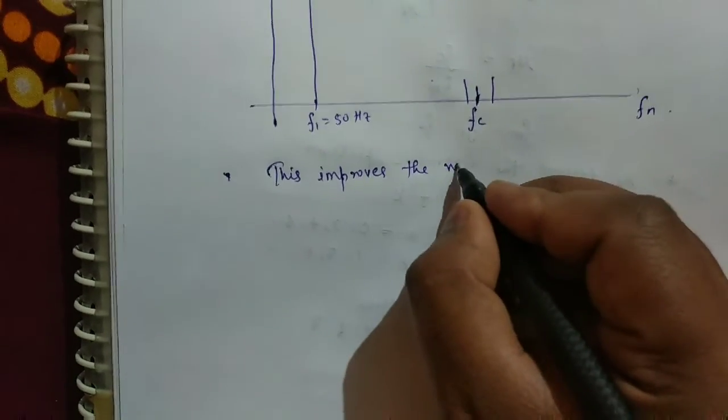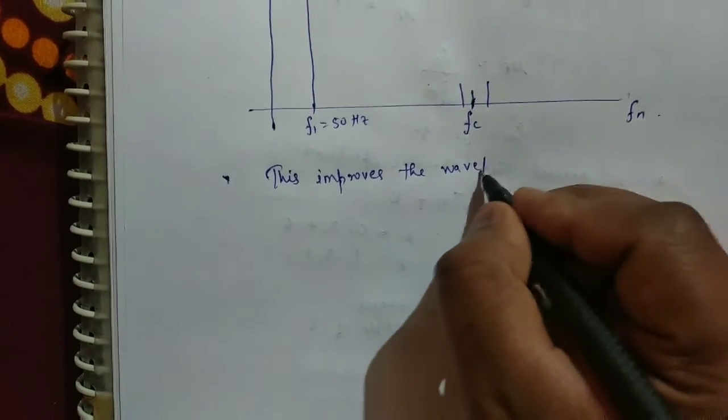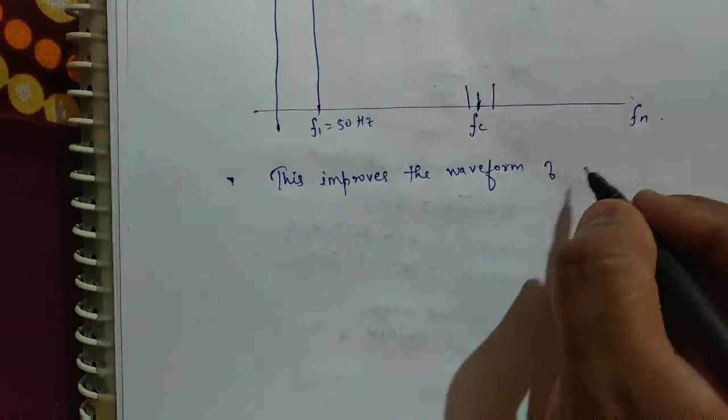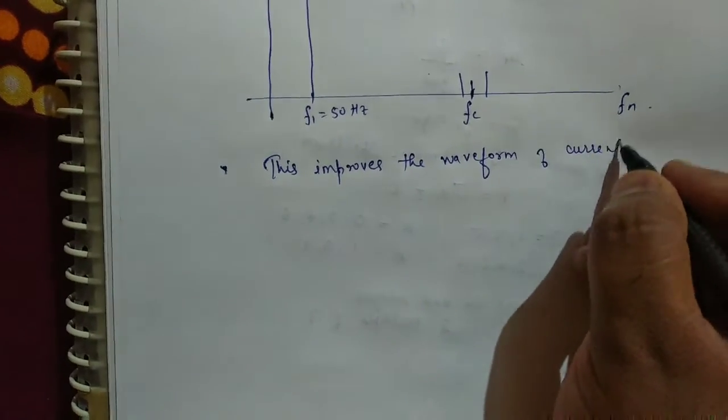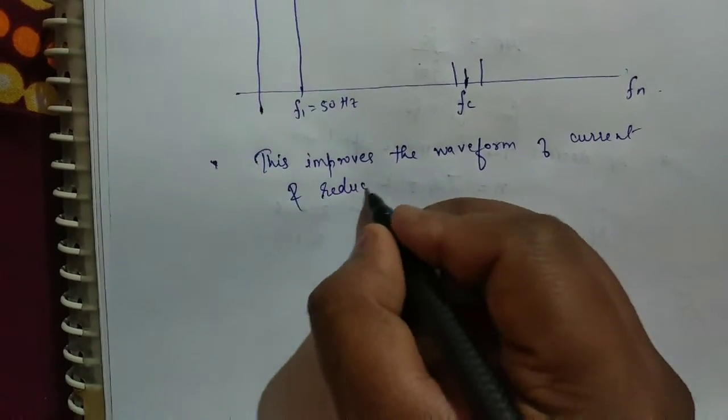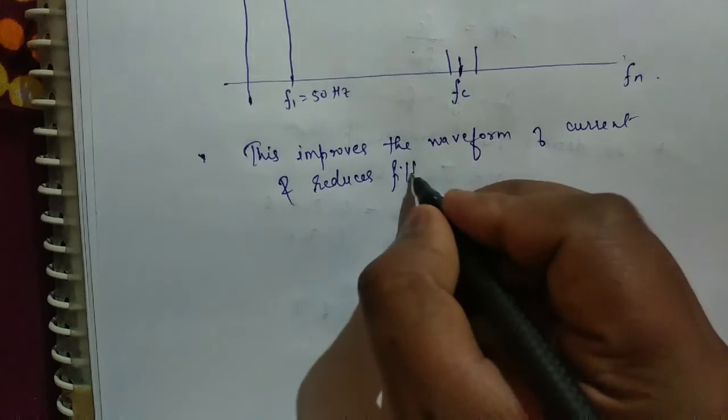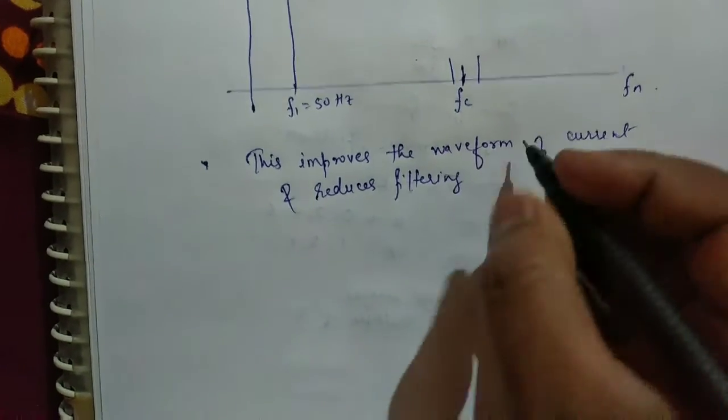Now see, by increasing the F_C, we can increase the frequency of predominant harmonics. So this improves the waveform of current and reduces filtering requirement.